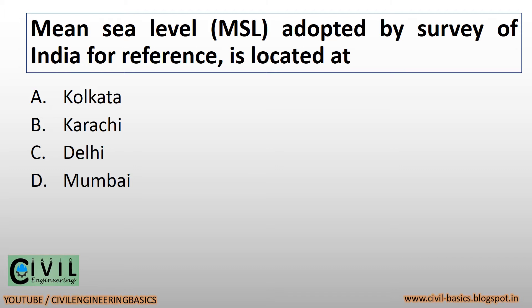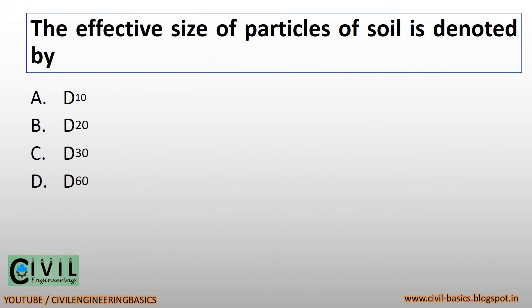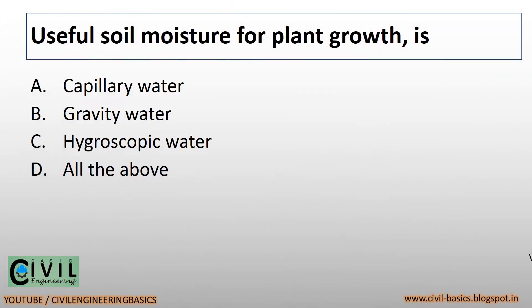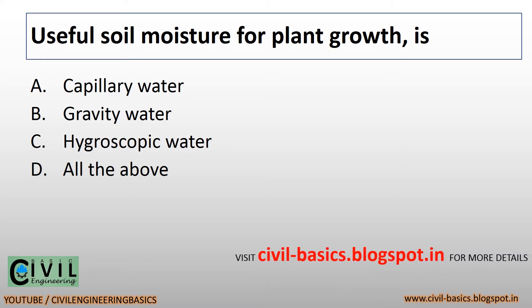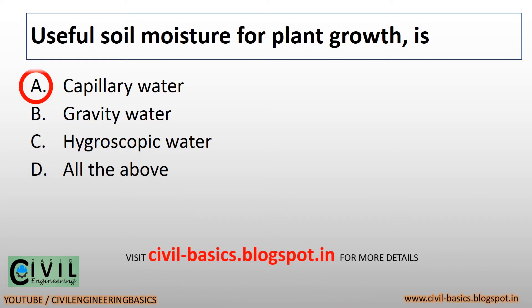Mean Sea Level (MSL) adopted by Survey of India for reference is located at Mumbai. The effective size of particles of soil is denoted by D10. Useful soil moisture for plant growth is capillary water.